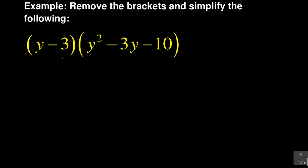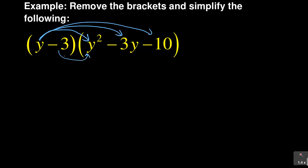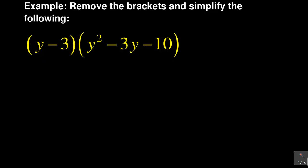Now let me do a second version, or a second method, that I think is sometimes more suitable. In the previous lesson, I was multiplying where y multiplies each term and minus 3 was multiplying each term. But another method we can use is to take y and multiply everything that is in the bracket.